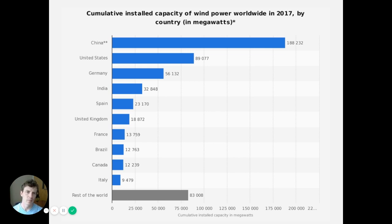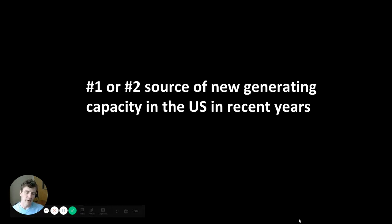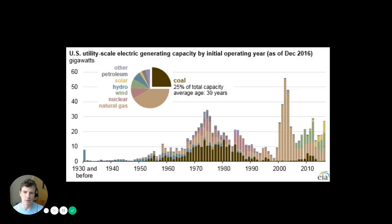This figure shows cumulative installed wind power capacity worldwide as of 2017 by country. China is the world leader, followed by the United States and Germany. Within the United States, we've seen really steady, strong growth in wind power capacity over the last 15 years. Wind has been the number one or number two source of new generation capacity in the United States, though that doesn't mean wind is the most prevalent type of generation overall.